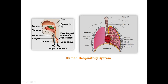The lungs are surrounded by a pleural membrane. A fluid called pleural fluid is present between the membranes, and the pleural membrane provides cushioning to the lungs.